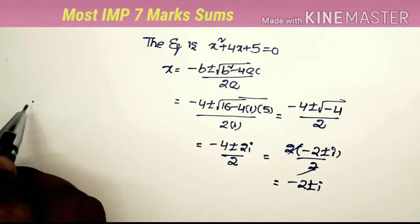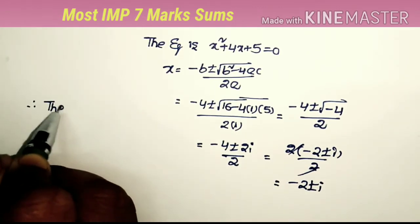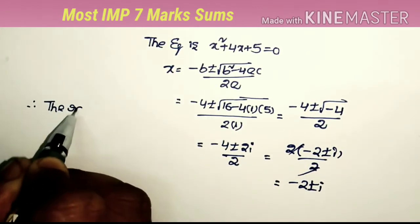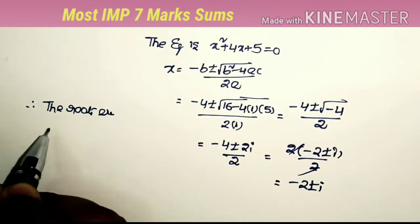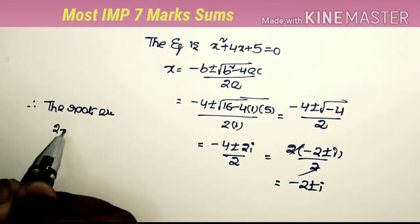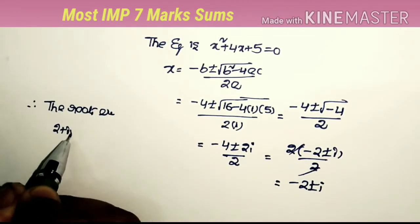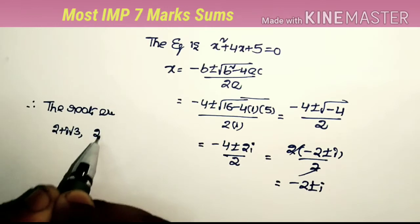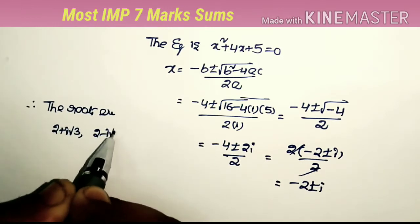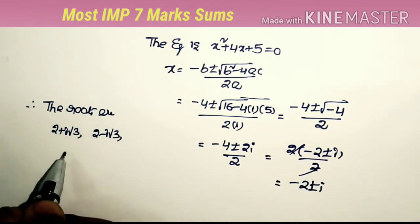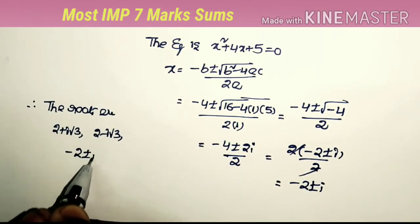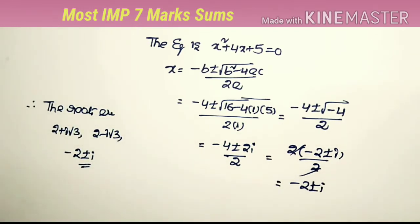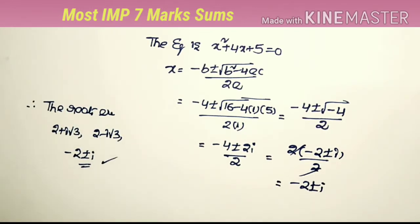Therefore the four roots of the given equation are: 2 + i√3 (the given root), 2 - i√3 (its conjugate), and -2 + i and -2 - i (from the second quadratic). These are all the roots of the equation.